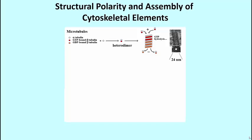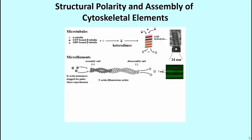Microfilaments are made up largely of polymerized actin polypeptides. At 7 nm in diameter, these thin filaments are the smallest component of the cytoskeleton.